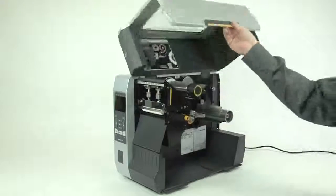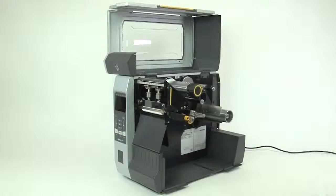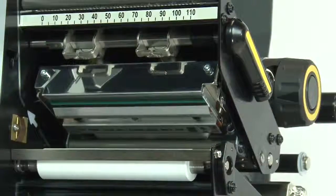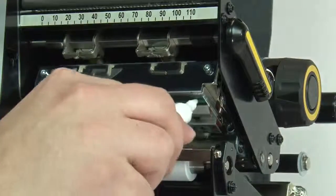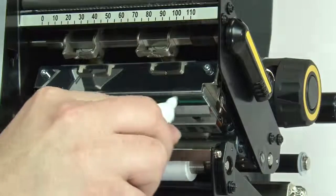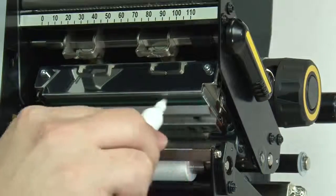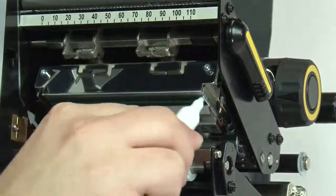Open the media door. Open the printhead. Use a Zebra preventative maintenance cleaning swab or pen to wipe along the brown strip on the printhead, or use a lint-free cloth or swab dipped in 99.7% isopropyl alcohol.